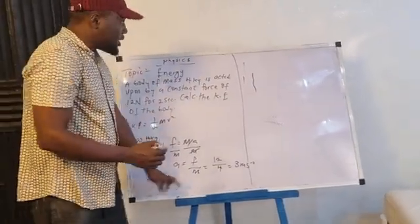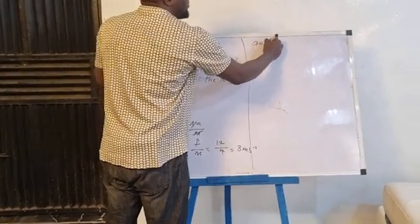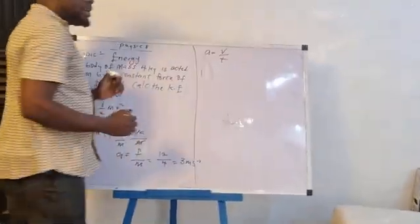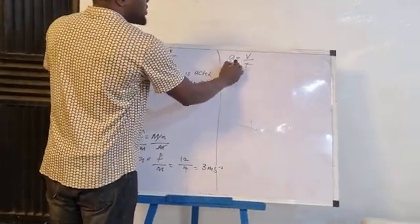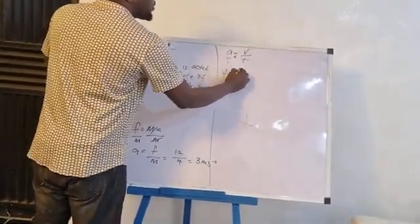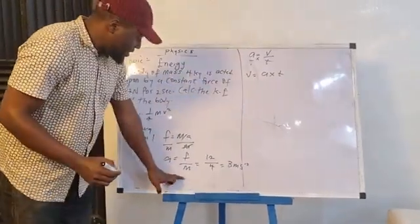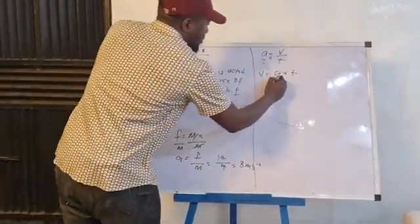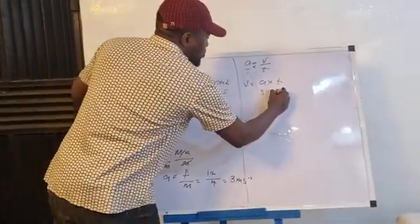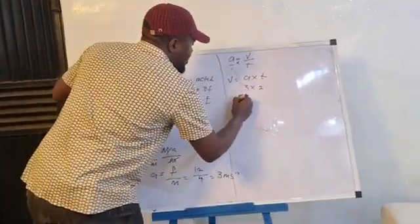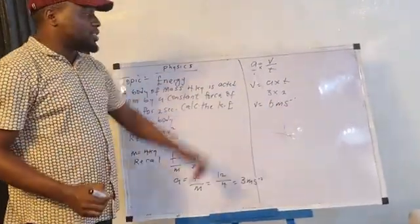Quickly, you will recall with me that acceleration is equal to velocity over time. Acceleration is equal to velocity over time, which therefore means that if I cross-multiply here, velocity is equal to acceleration times time. So, when we want the acceleration, we have acceleration as 3, now we have 3 times the time which was given in the question as 2. And therefore means that my velocity is equal to 6 meter per second. So this is my velocity.